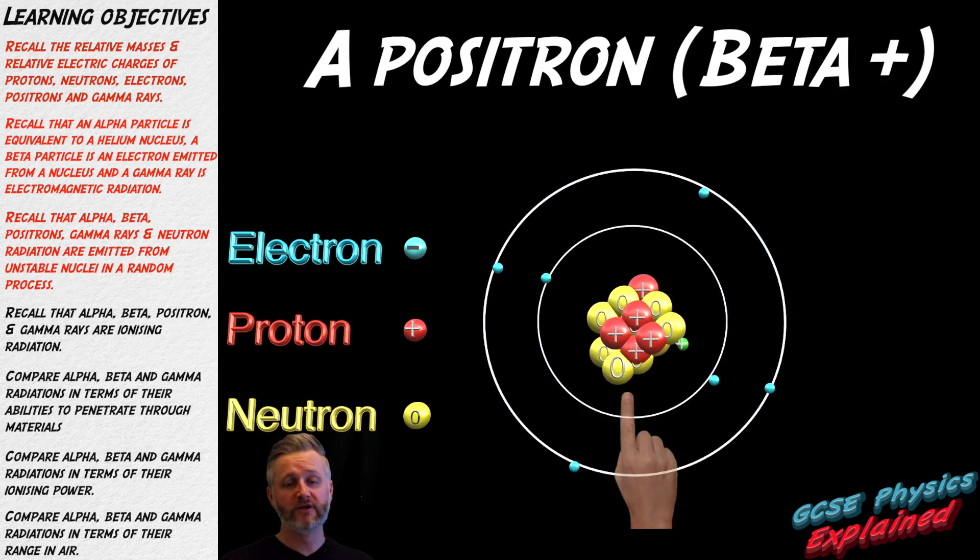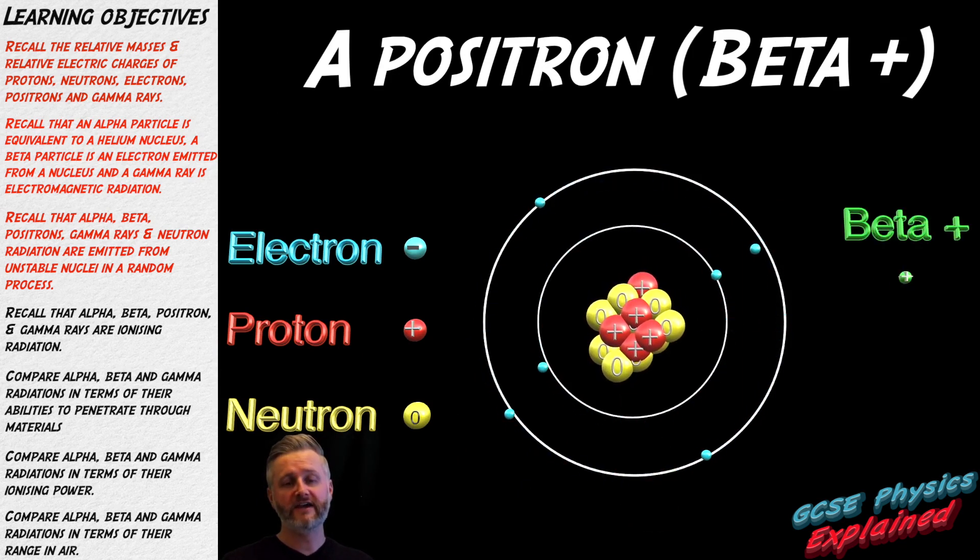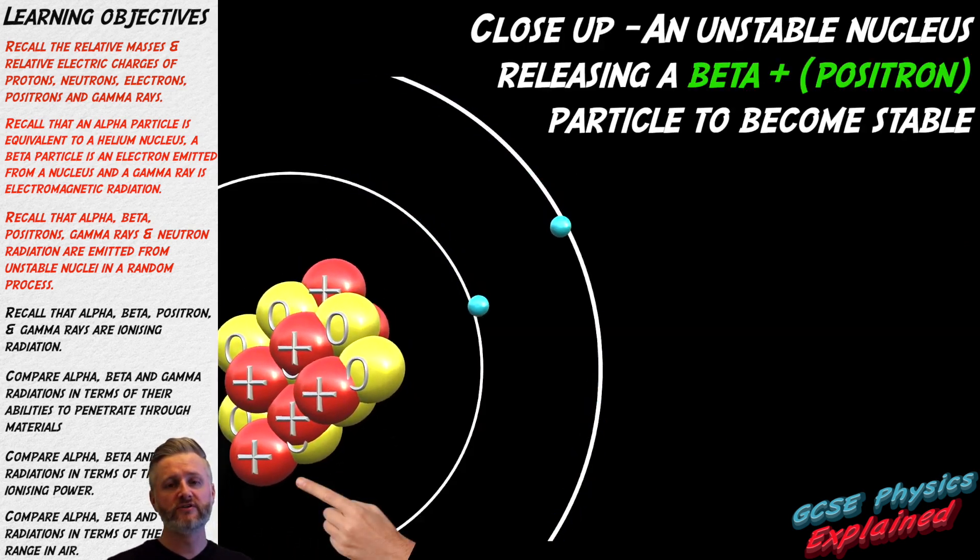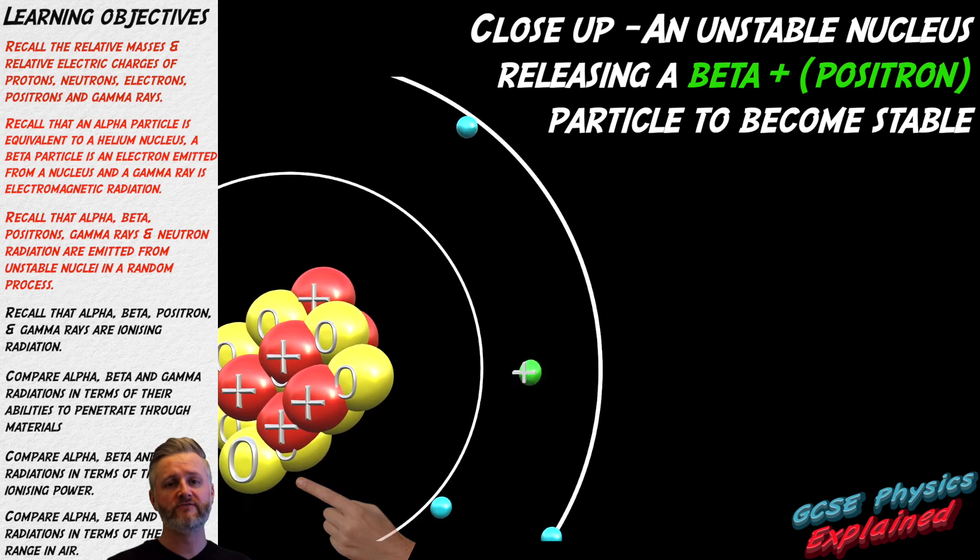The positron is a beta plus particle. It is a high speed particle with the same negligible mass as an electron but with a charge of plus one. Here is a slow motion close-up of a positron being released.